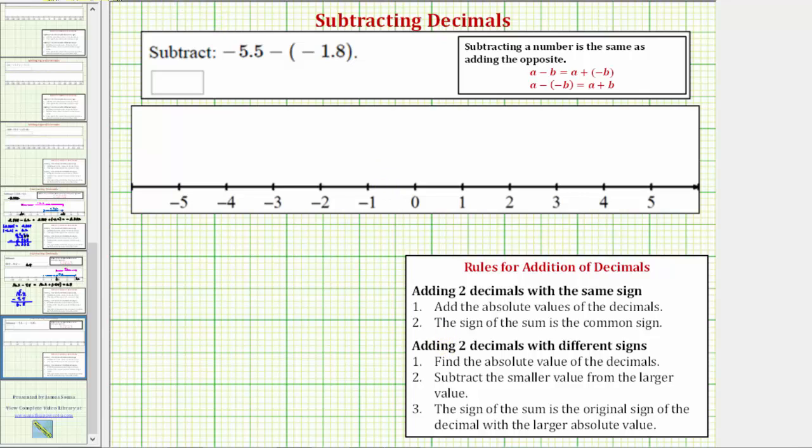We can write this difference as a sum because subtracting a number is the same as adding the opposite. So because subtracting negative b is the same as adding positive b, we can write negative 5.5 minus negative 1.8 as negative 5.5 plus positive 1.8.